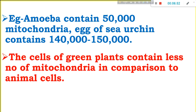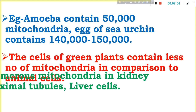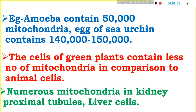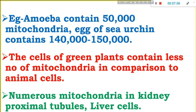The cells of green plants contain fewer mitochondria in comparison to animal cells. There are numerous mitochondria in kidney proximal tubule cells and liver cells.